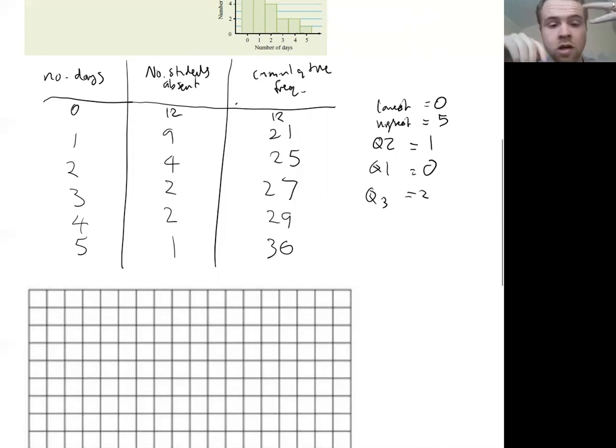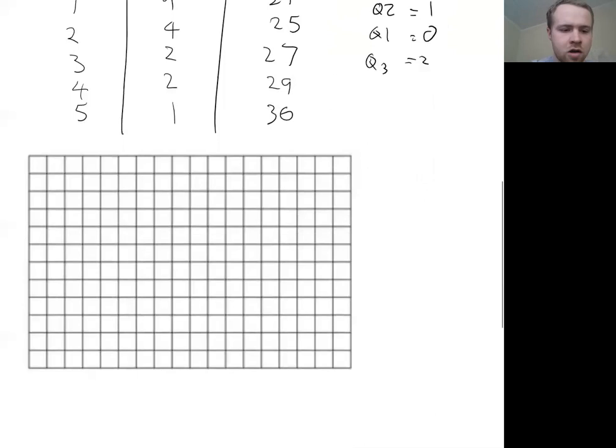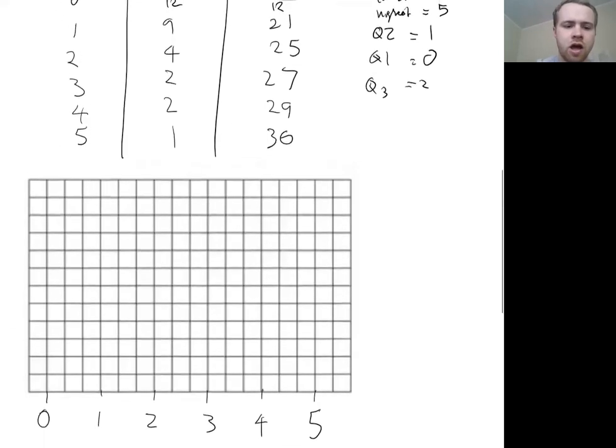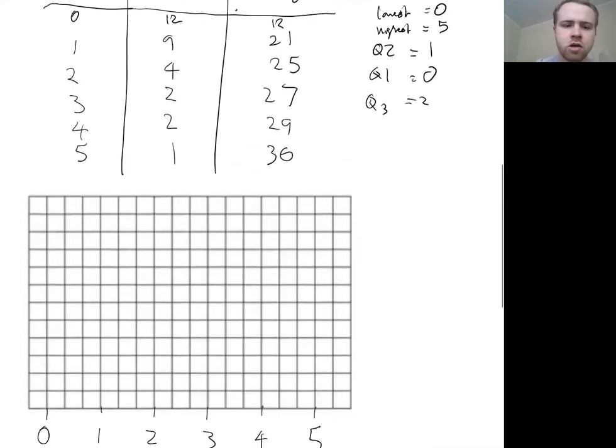So the way that we use the cumulative frequency table is if we're trying to find what number score it is, we've got to think, well, is it going to be in this? Is it less than that or less than that or less than that? And that's how we work it out. So we've got a very kind of strange looking table here. But let's work it out on our box plot. So we'll put zero here and we'll go up every—I think that'll be one. Sorry, every three we're doing. Two, three, four.